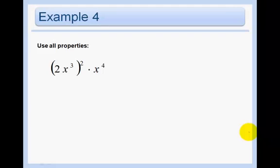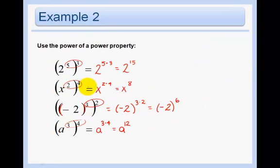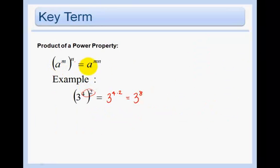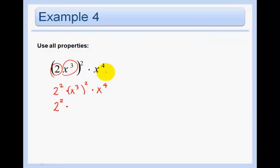Okay, let's use all the properties we've learned so far. So first thing we need to do is we need to do 2 squared, and then we do the x cubed squared. I'm just writing all my steps. Times x to the 4th. Okay, now I want to get rid of the parentheses. So I have 2 squared times, and then when you do a power to a power, remember, what do we do? Let's see. A power to a power, we multiply the exponents. So we're going to multiply.